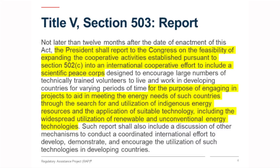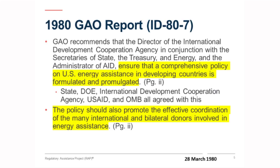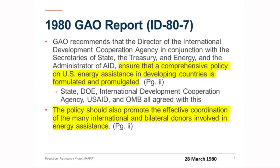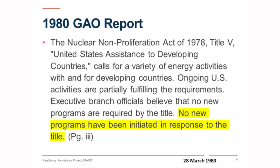I love the idea that the words 'Peace Corps' are in the legislation. In 1980, GAO reported on this and recommended that the requirements of the 500 sections — comprehensive policy — should be formulated and promulgated. All the relevant agencies and institutions agreed, and it should also involve multilateral institutions and international donors. It went on to say that no new programs have been initiated in response to the title — and that was in March of 1980.